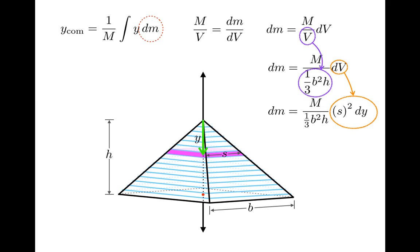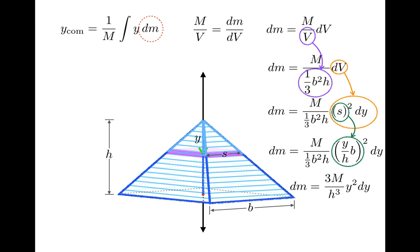The last thing to notice is that the side length of a slab depends on y, or the distance the slab is away from the apex. If you compare the big pyramid with a smaller pyramid that has base length s, you can see that these are similar. So the ratios of base length to height should be the same for both. This means that you can substitute y over h times b for s. And then simplifying, you get this expression for dm.